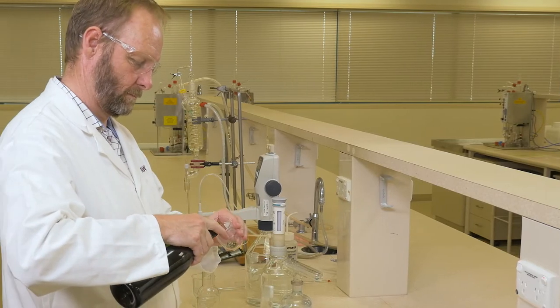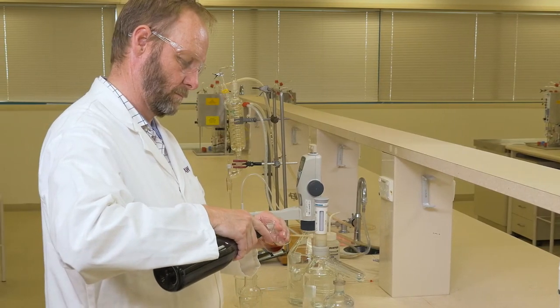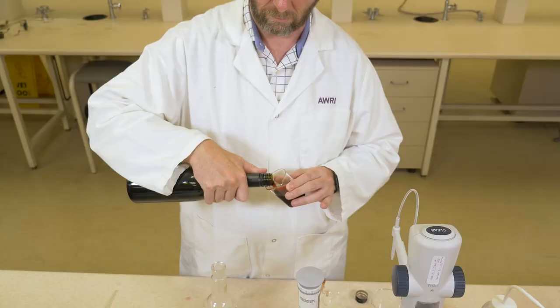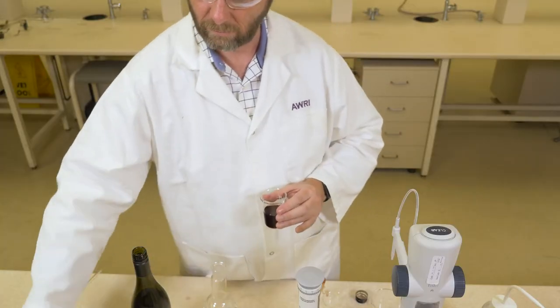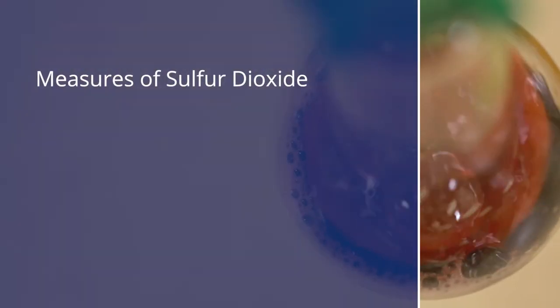Sulfur dioxide measurement is one of the most common tests in the wine laboratory and is important for both monitoring production and ensuring that wine meets regulatory guidelines. There are two common measures of sulfur dioxide.